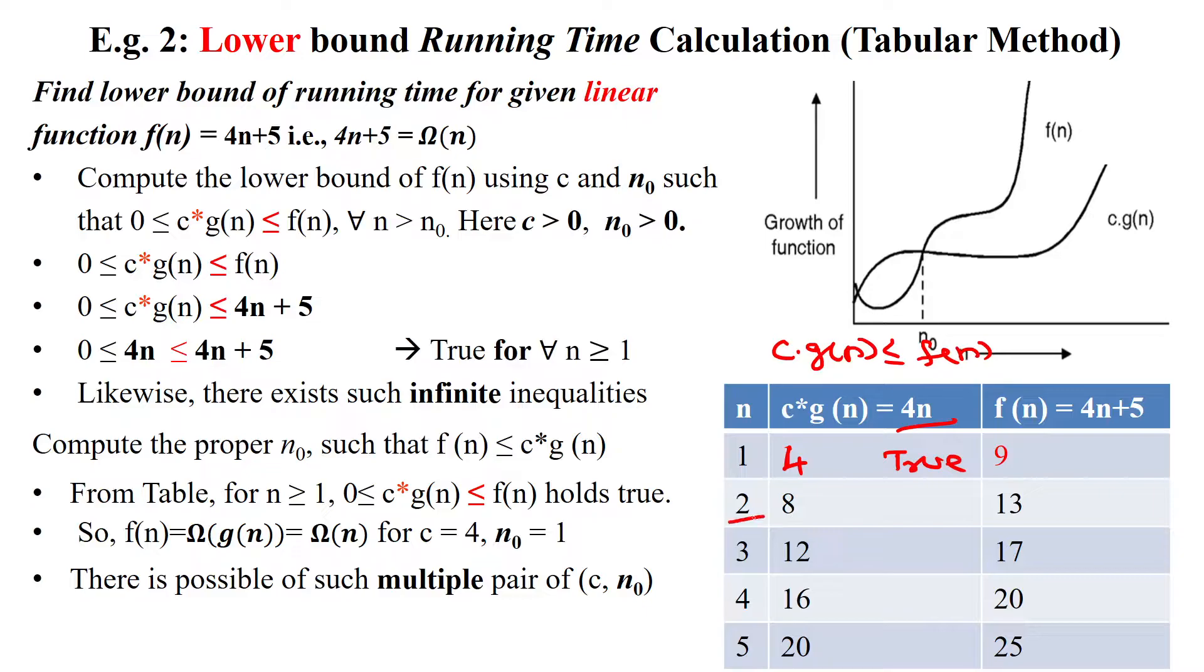Like that, when you are substituting 2, 4 times 2 equals 8, and here 4n plus 5 equals 13. This is also true, and here also it is true.